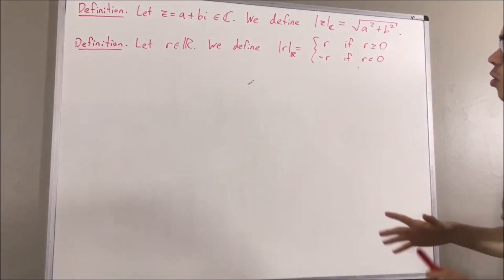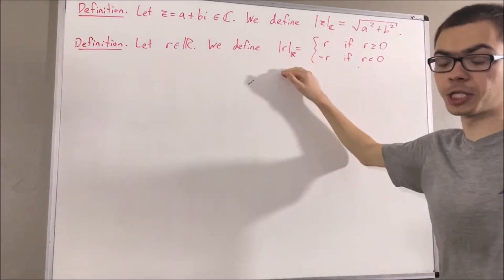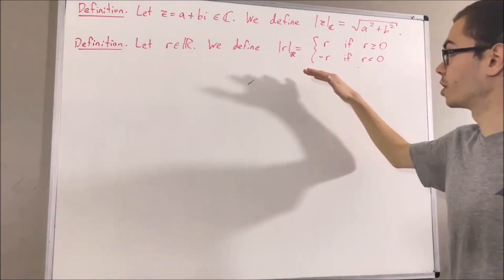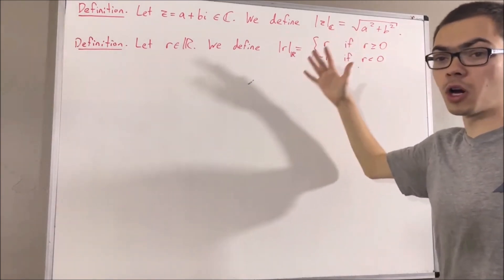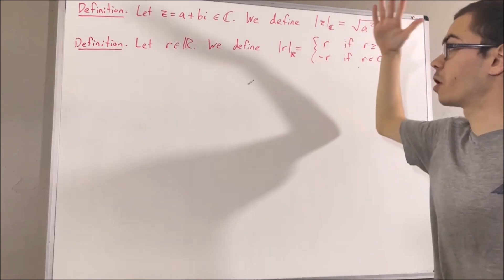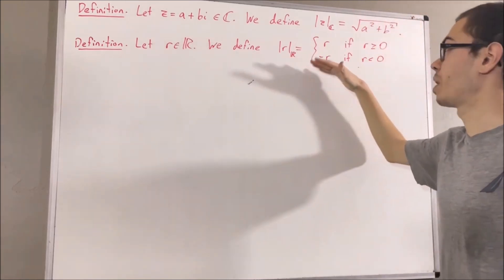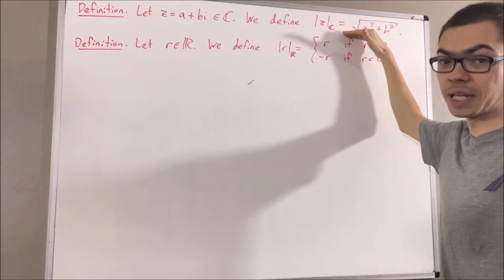The claim is we don't have to distinguish between these two definitions. In other words, we claim for every real number r, the absolute value of r in the real sense is equal to the absolute value of r in the complex sense.